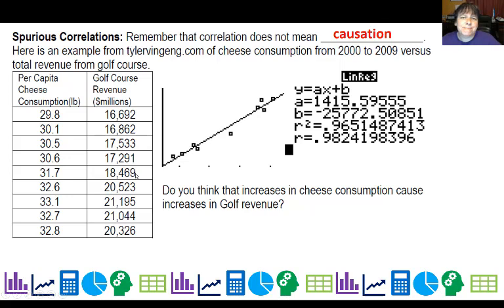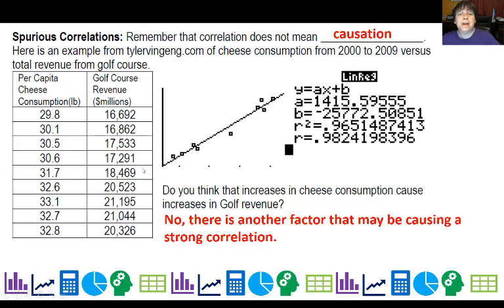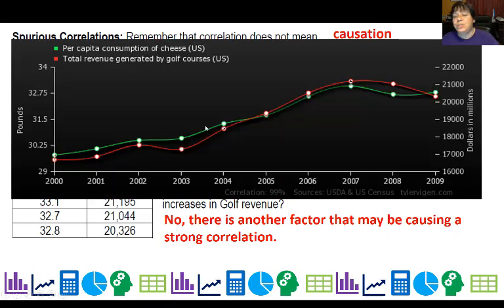Well, do you really think that cheese consumption determines golf revenue? Hopefully not. There has to be another factor. And actually what Tyler Vingen does, he doesn't display this linear regression. He displays a time series, which is actually quite helpful for us because we can think, all right, what's going on here.